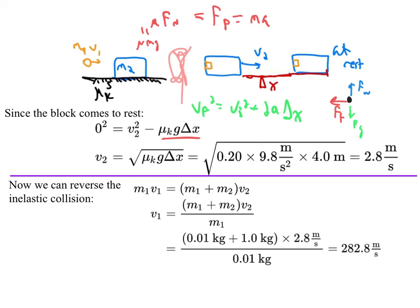Now we can do the momentum part and we can say during this collision we went from having some velocity to having V2. So we start off with just the bullet moving but after they're moving together, and then we just do some algebra and we find it's 282.8 meters per second.